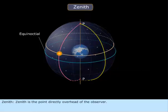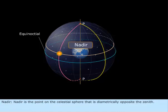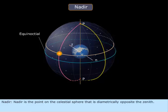Zenith. Zenith is the point directly overhead of the observer. If a line is drawn from the center of the Earth through the observer and extended, it will cut the celestial sphere at its zenith. Nadir is the point on the celestial sphere that is diametrically opposite the zenith.